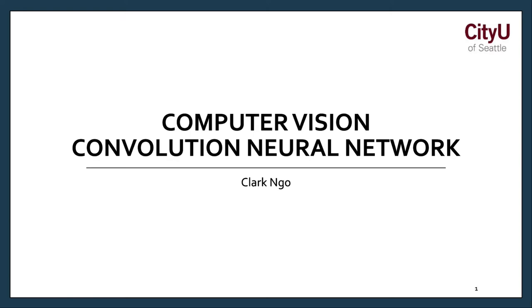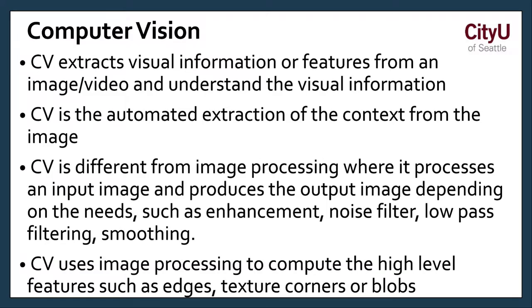Welcome! This week we'll talk about computer vision and the convolution neural network. Computer vision extracts visual information or features from an image or video and understands the visual information. Think about us humans having our eyes and our eyes can basically process that information. When there's a camera you hit the shutter and it basically grabs that information.